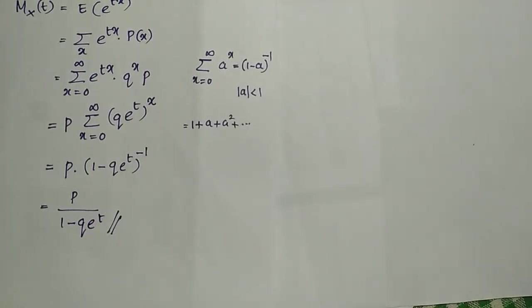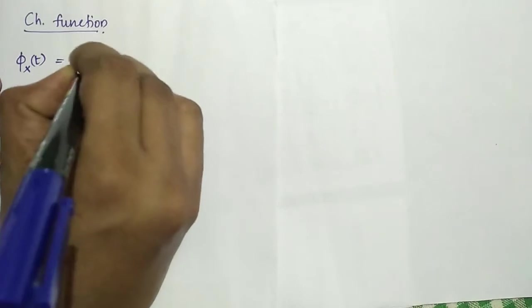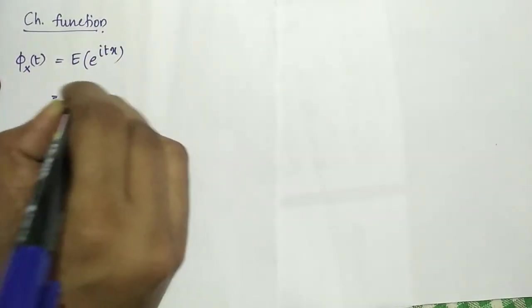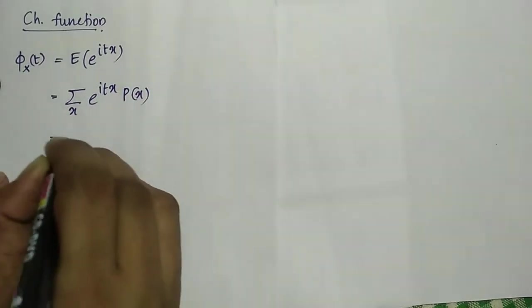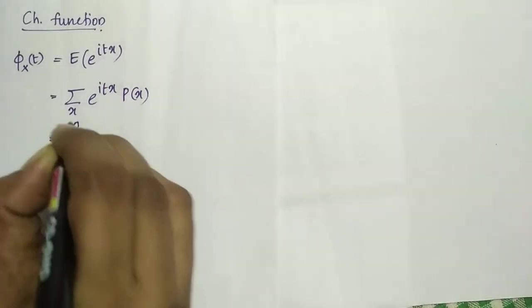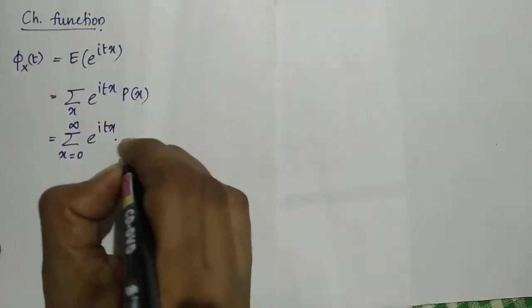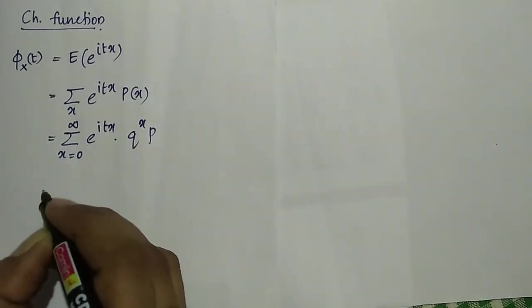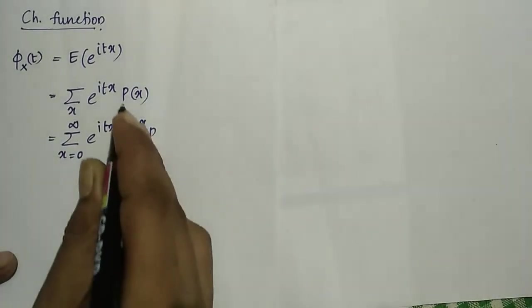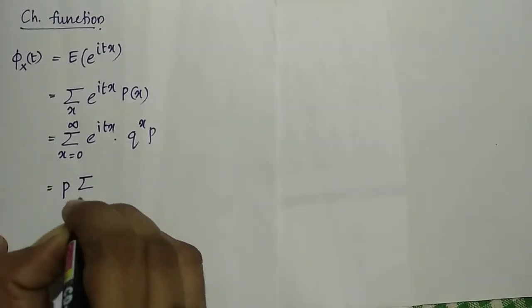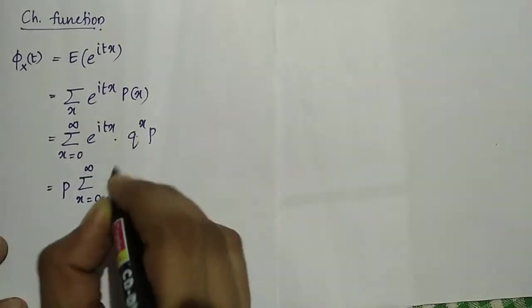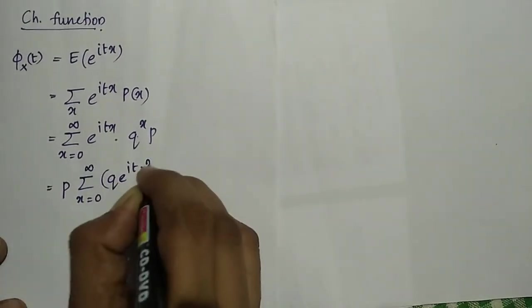This is the MGF of a geometric distribution. Now the characteristic function of a geometric distribution, defined as phi_X(t), is equal to the expectation of e raised to itx, which equals summation over x of e raised to itx times p(x), which is summation from x equal to 0 to infinity of e to the itx times q raised to x times p.